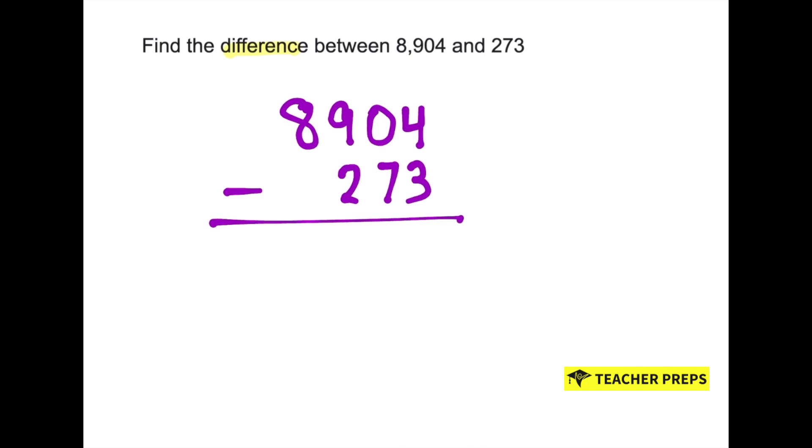Now just like with addition, we need to make sure that our columns are lined up properly: the ones with the ones, the tens with the tens, and so forth. Now we can go ahead and subtract our ones columns. 4 minus 3 is 1.